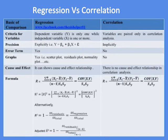In regression analysis, graphs are used such as scatter plot, residual plot, normality plot, etc., while there are no graphs used in correlation analysis. Regression analysis shows a cause and effect relationship, while there is no cause and effect relationship in correlation analysis.